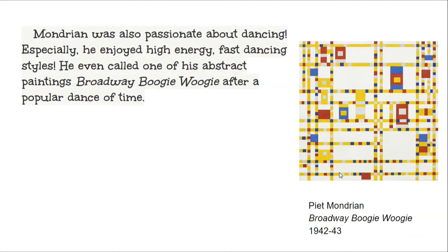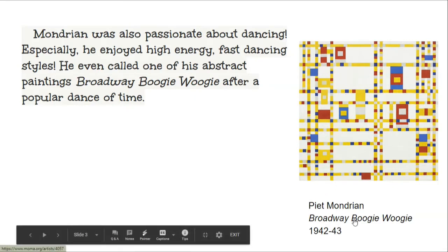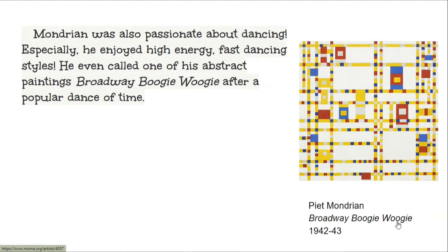Mondrian was also passionate about dancing. Especially, he enjoyed high-energy, fast-dancing styles. He even called one of his abstract paintings Broadway Boogie Woogie after a popular dance of the time. This is the masterpiece Broadway Boogie Woogie. He painted this between 1942 and 1943.